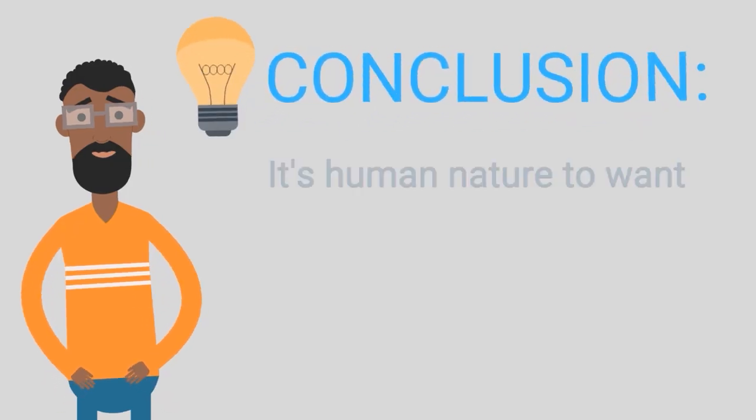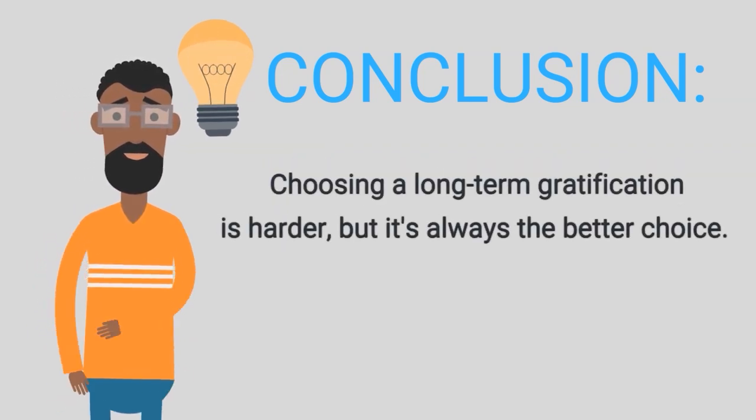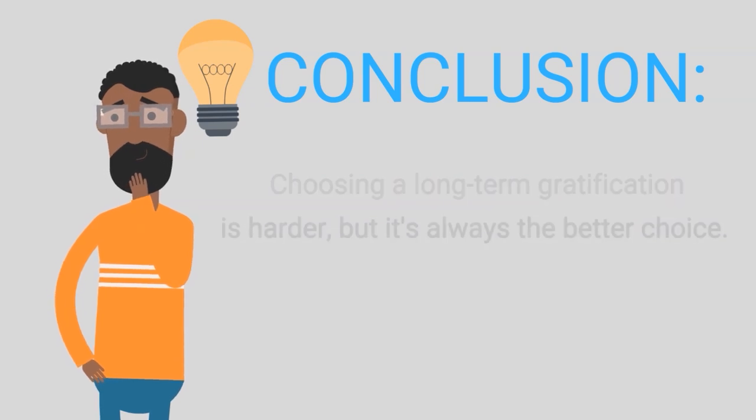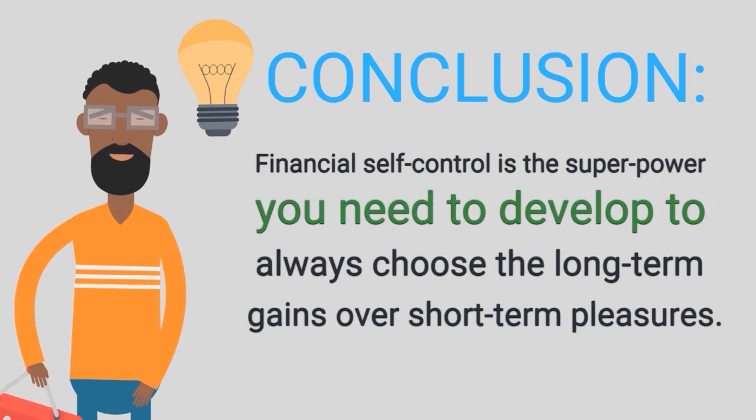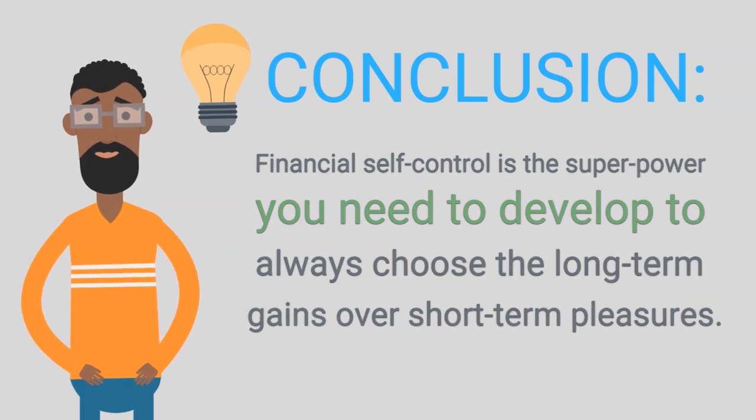So, in conclusion, it's human nature to want to gratify desires instantly. Choosing long-term gratification is harder, but it's always the better choice. Financial self-control is the superpower you need to develop to always choose the long-term gains over short-term pleasures.